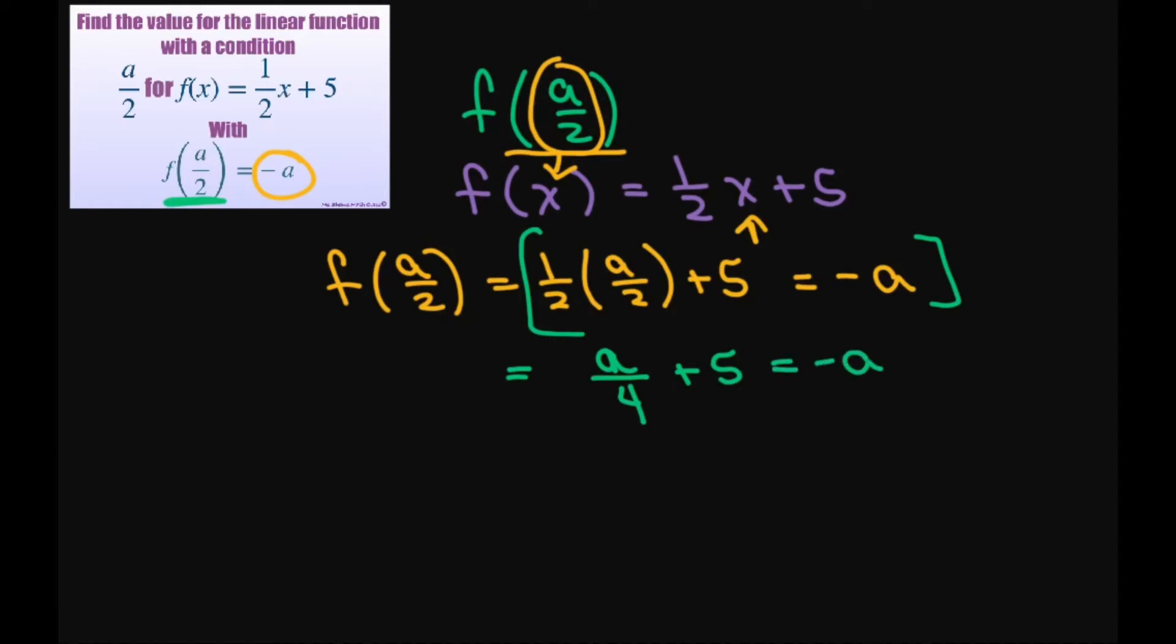Now what I want to do is group my a's together. So I have a divided by 4 plus a equals negative 5. So I just subtracted 5 from both sides and I added a to both sides. If I want a common denominator I'm going to put a 4 there. So I have to also multiply that by 4. So that gives me 5a divided by 4 equals negative 5.